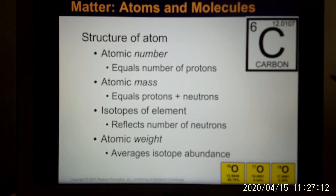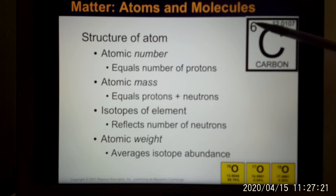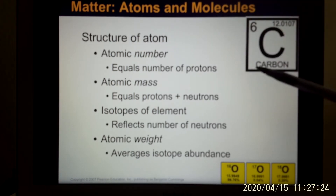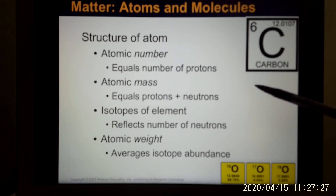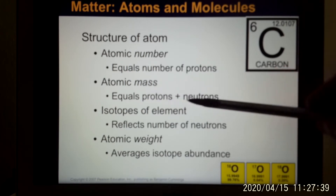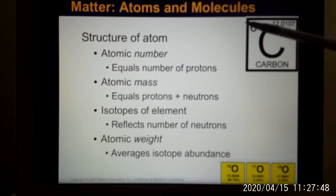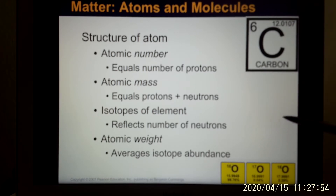Each element has a different number of protons, so they use the proton to define what the element is. Like this one is number 6 — number 6 is carbon — and this number is called the atomic number. When we calculate how much they weigh, because the electron is so small they ignore it, and they only use the number of protons and neutrons added together. That's called atomic mass. Like carbon, atomic mass is about 12: it has 6 protons, and since atomic mass is 12, it tells you it also has 6 neutrons.